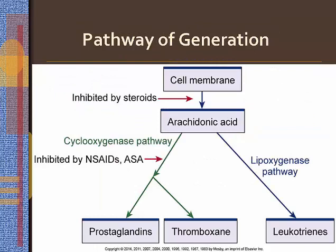Following injury, arachidonic acid is converted into prostaglandins, thromboxane, and leukotrienes, and is considered pro-inflammatory. These are potent vasodilators, and some subtypes of prostaglandins formed when platelets are activated can inhibit platelet and neutrophil aggregation. Prostaglandins also play a significant role in sensitizing pain receptors to stimuli that would normally be painless, and act as pyrogens by stimulating the temperature-regulating area of the hypothalamus to produce a febrile response.